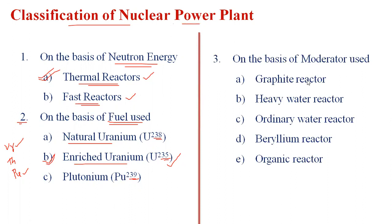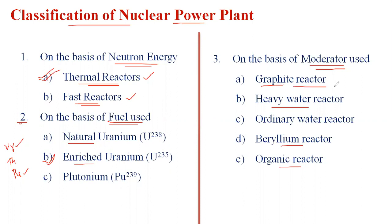The third classification is based on the moderator used. The types include graphite reactor, heavy water reactor, ordinary reactor, beryllium reactor, and organic reactor. Nuclear power plants prefer the graphite reactor because the graphite material does not release radiation particles into the open atmosphere. If any alpha, beta, or gamma radiation is released in the reactor, the graphite absorbs it and does not reflect it back into the open environment.